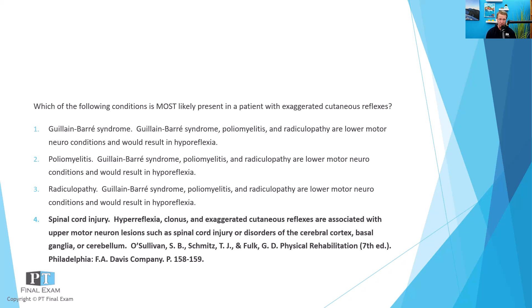Now these other conditions — Guillain-Barré syndrome, poliomyelitis, and radiculopathy — are all classified as lower motor neuron lesions. Guillain-Barré syndrome, also known as acute inflammatory demyelinating polyneuropathy, is going to result in a lower motor neuron pathology: hyporeflexivity, hypotonia. Poliomyelitis, same thing — attacking the anterior horn cell in the spinal cord, which is the beginning of the lower motor neuron pathway, so polio is likely to result in hyporeflexia. And radiculopathy is where you have some type of damage or pinching going on at the nerve root level, also resulting in a lower motor neuron condition.